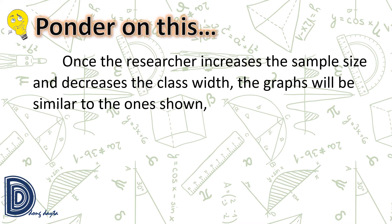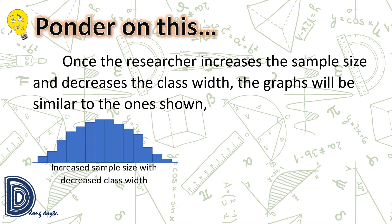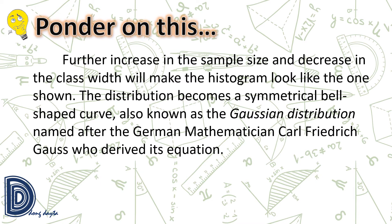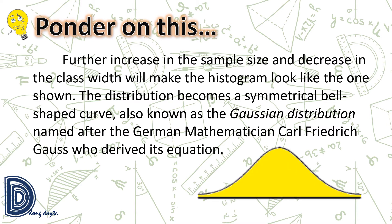Once the researcher increases the sample size and decreases the class width, the graphs will be similar to these. Further increasing the sample size and decreasing the class width will make the histogram look like a symmetrical bell-shaped curve, also known as the Gaussian distribution, named after the German mathematician Carl Friedrich Gauss, who derived its equation.